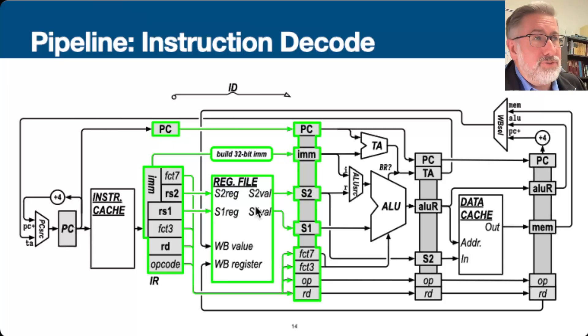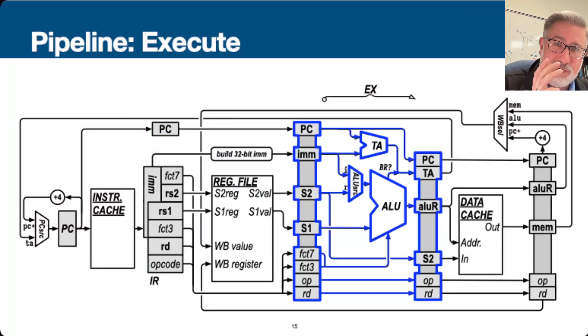In the third phase, which is execute, we are taking that information that we looked up in the register file, and we are doing it. The ALU will do the thing. So there's a choice here whether we're adding a register to a register or a register to an immediate. We're also calculating the target address, storing that in a new part of this pipeline register, so that if it turns out we're doing a branch or a jump, and if it turns out we want that target address to be the new program counter, we've calculated it and it's ready to go. Result of the ALU goes into ALUR.